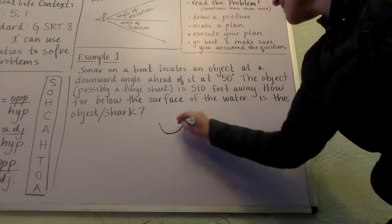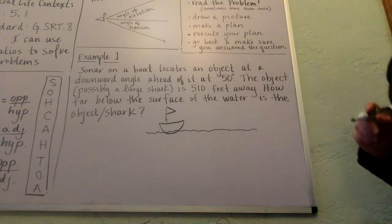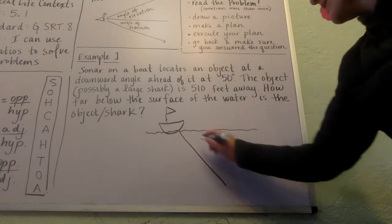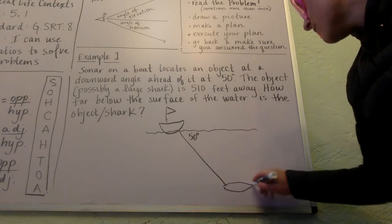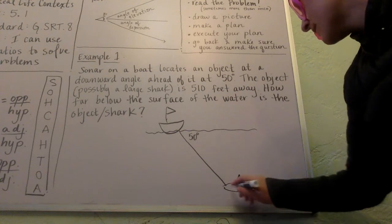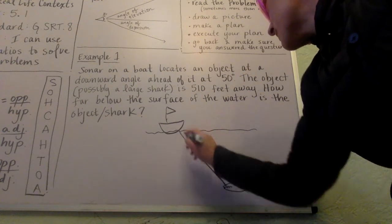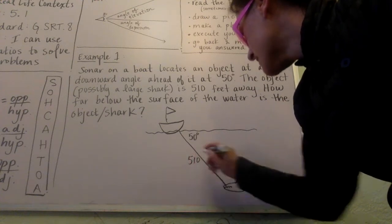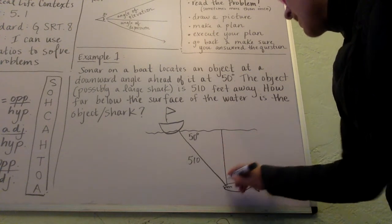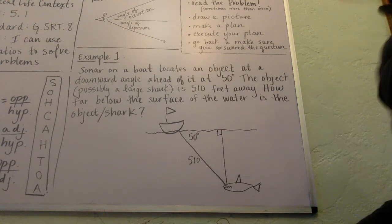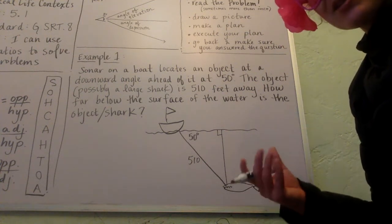Don't make fun of my artistic skills. Here's a boat, and here's the water that it's sitting in. It spots ahead of it at a downward angle that is 50 degrees. The sonar lets the people on the boat know that the shark or object is 510 feet away. What we're trying to find out is how far from the surface is the shark. Let's remember we're in trigonometry - there's going to be a triangle involved here.